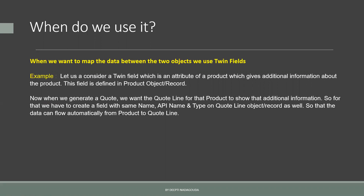For example, let us consider a twin field which is an attribute of a product. Every product has its name, product code, product family, type, and other standard fields. But if you want to add any additional attribute that gives additional information, that attribute can be replicated on another object using twin fields. So if you have added an attribute on a product object, and when we generate a quote, we want the quote line for that product to show that additional information. Whenever you add a product on a quote line, it shows certain attributes like product family. So this attribute — if created as a twin field on the product object — will be shown on the quote line as well, if we add that same field with the same name, API name and type on the quote line object.